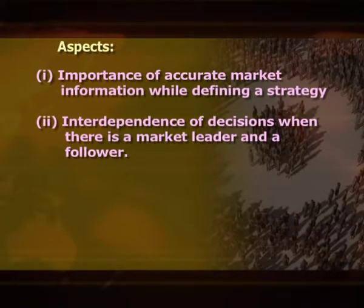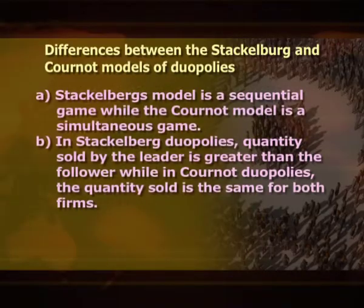In this game, the leader has decided not to behave as in the Cournot model. However, it is not certain whether the leader would produce more and make more profits than the follower, because production will be larger for the firm with lower marginal cost. Total production will be greater and prices lower, but player 1 will be better off than player 2. This highlights two aspects: the importance of accurate market information while defining a strategy, and the interdependence of decisions when there is a market leader and a follower. A major difference between Stackelberg and Cournot models is that Stackelberg's model is a sequential game while the Cournot model is simultaneous. In Stackelberg duopolies, quantity sold by the leader is greater than the follower, while in Cournot duopolies the quantity sold is the same for both firms.